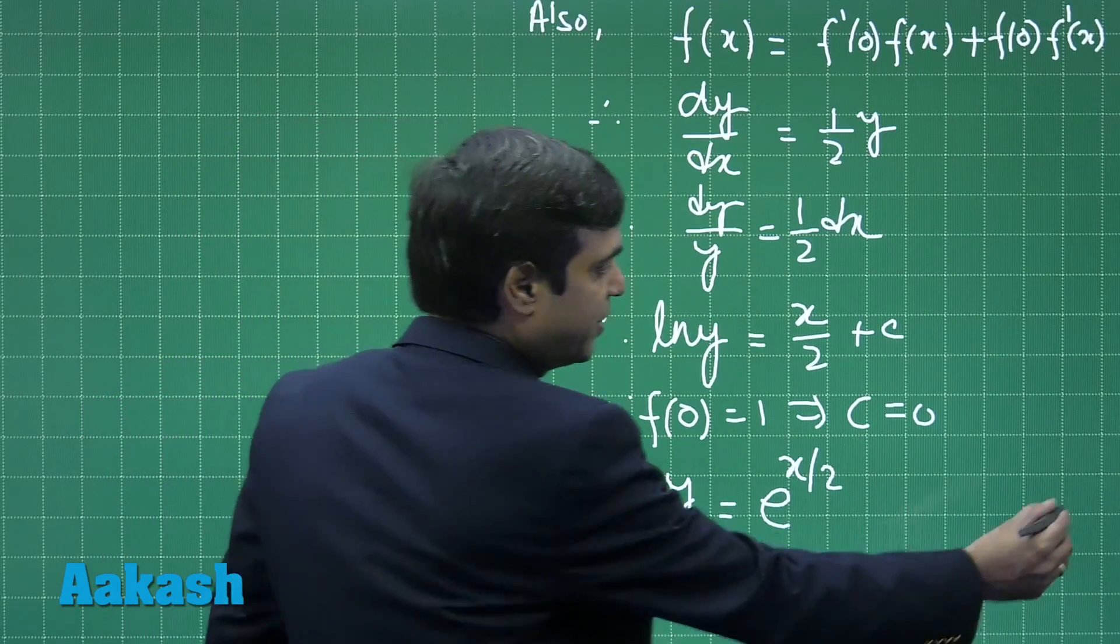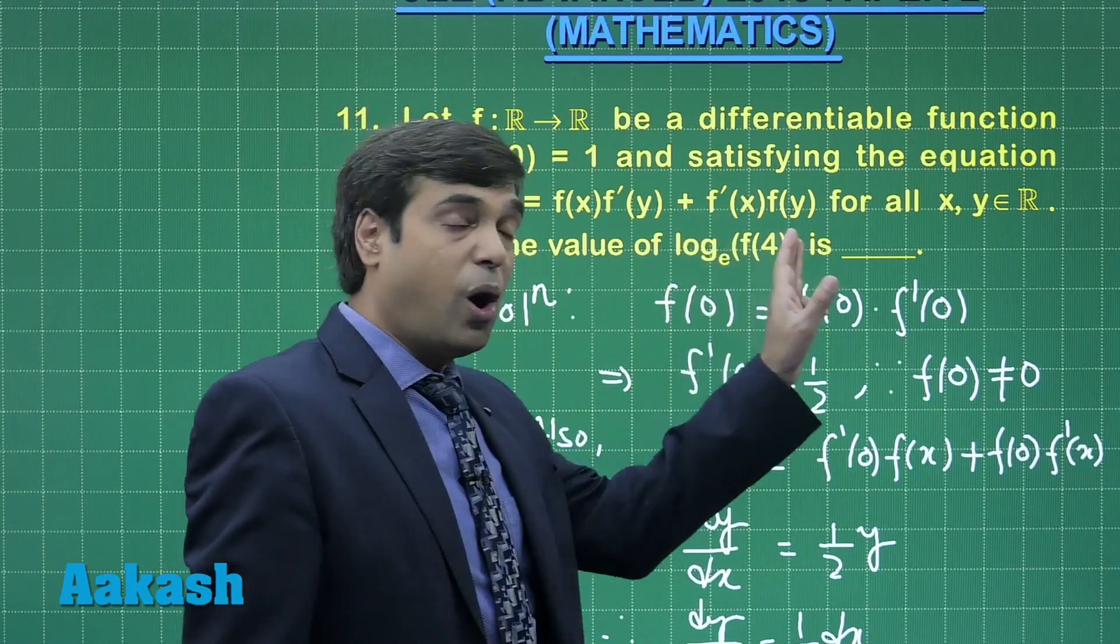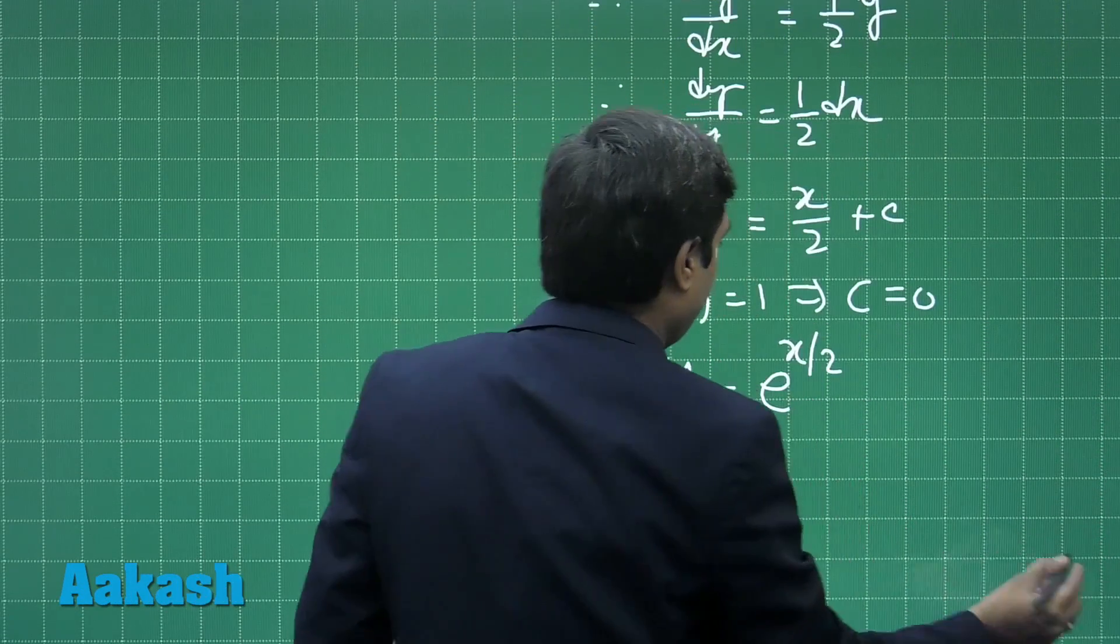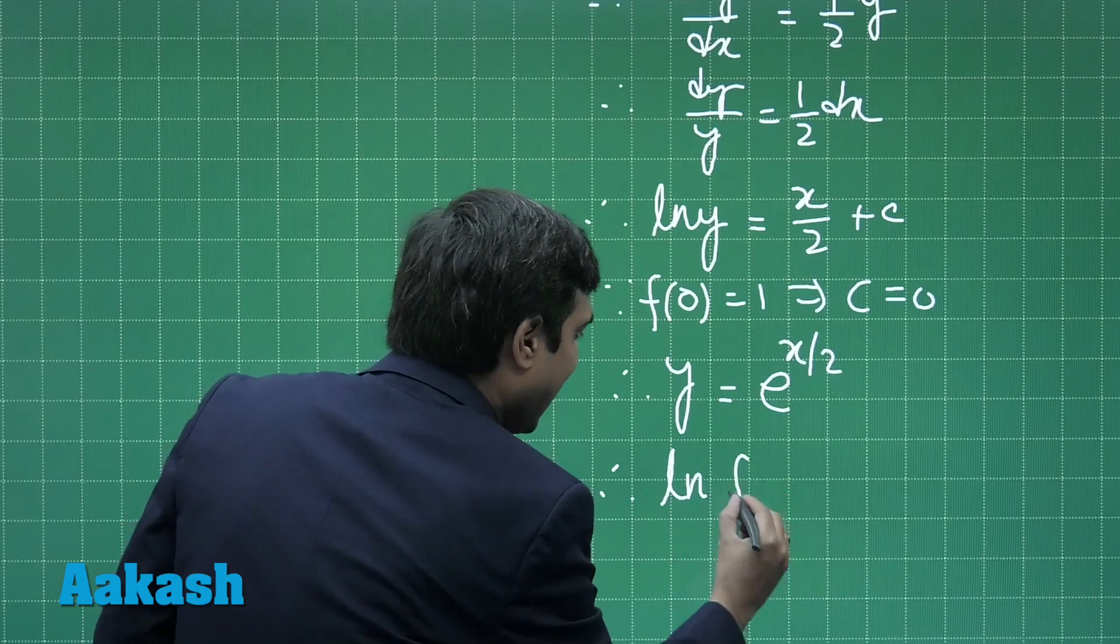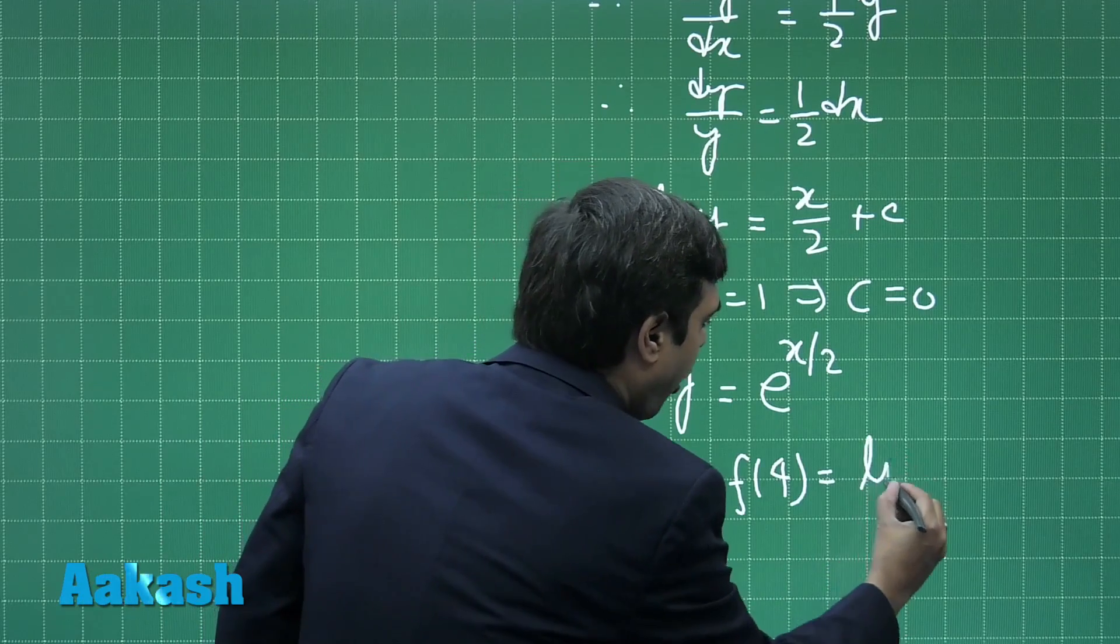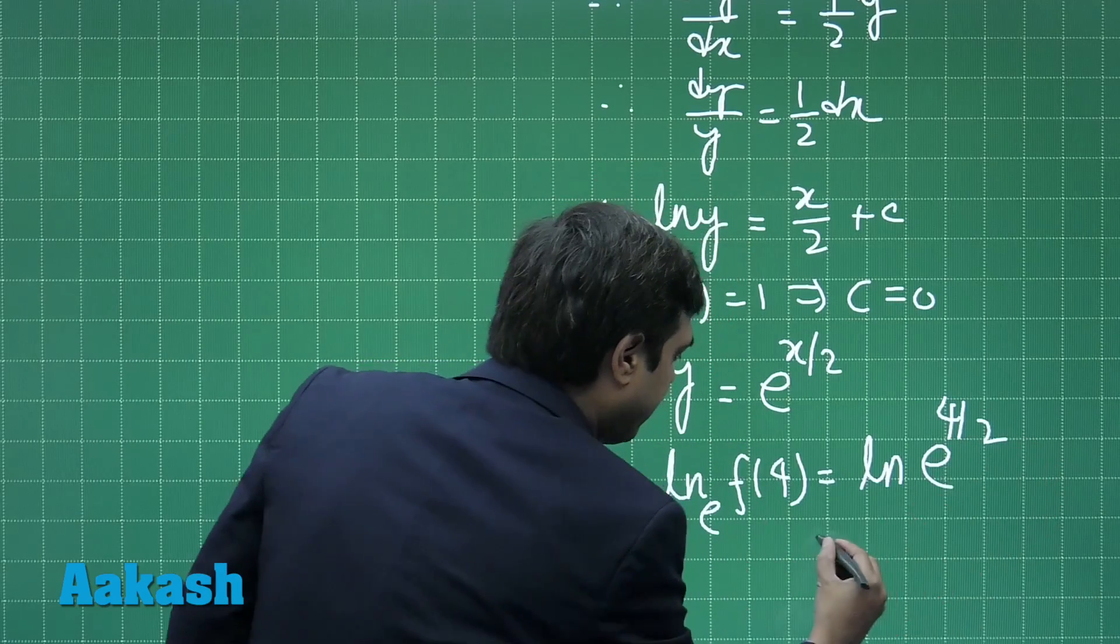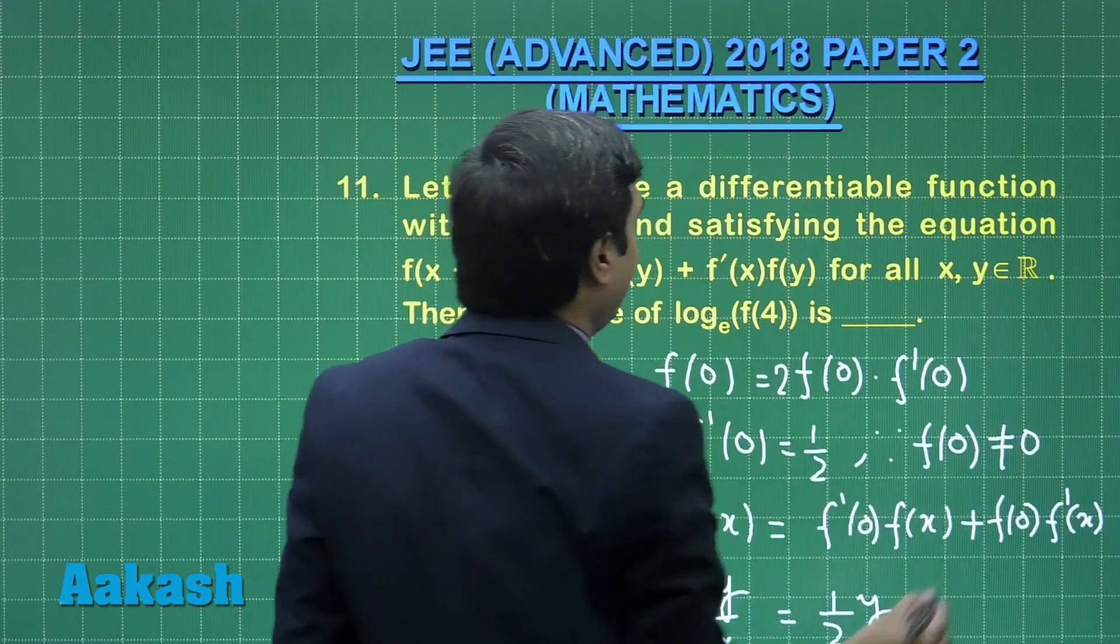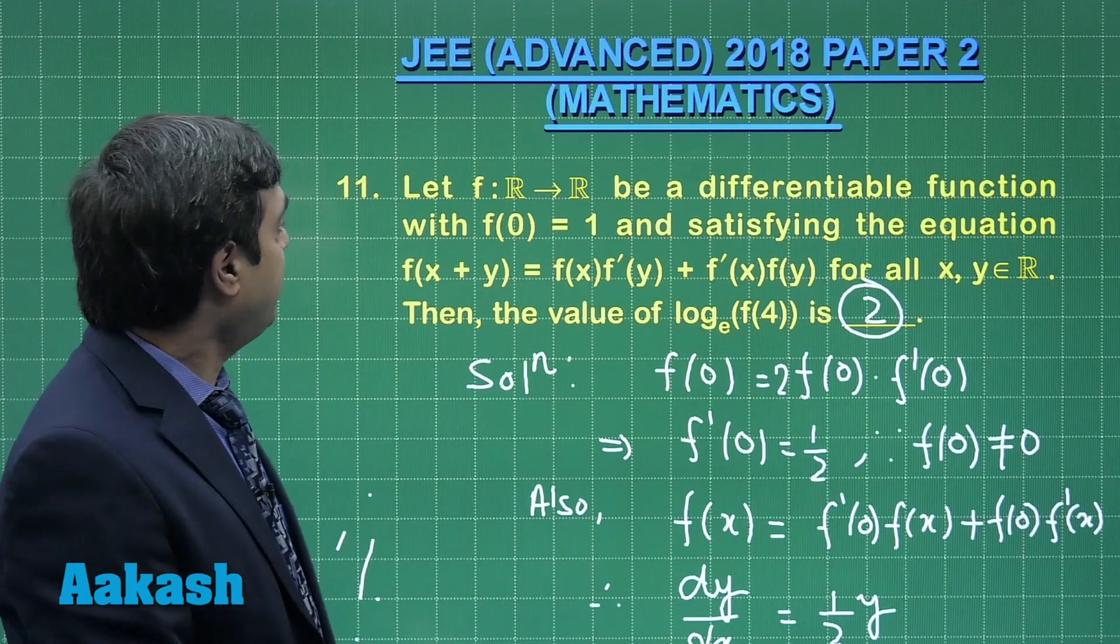Moving to the question, find the value of log f(4) to the base e. Therefore log f(4) base e equals log e to the power 4/2, or simply 2. The correct answer for the question comes out as 2. Moving to the next one, question number 12.